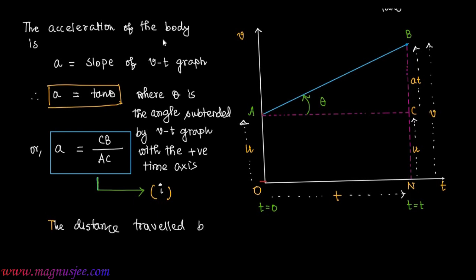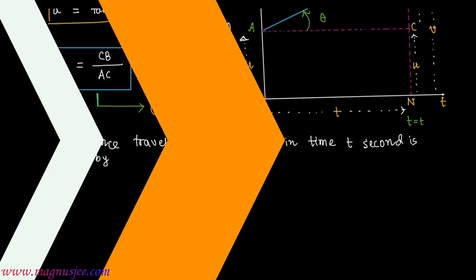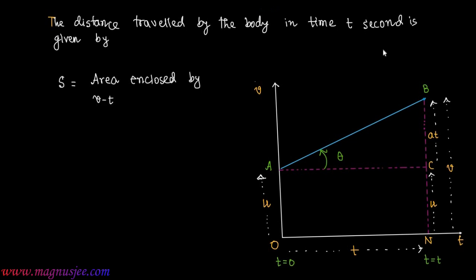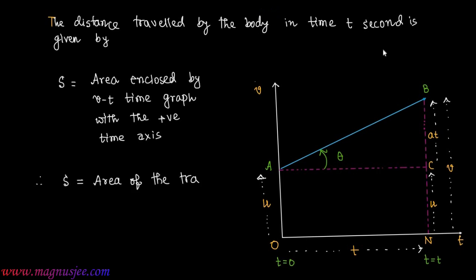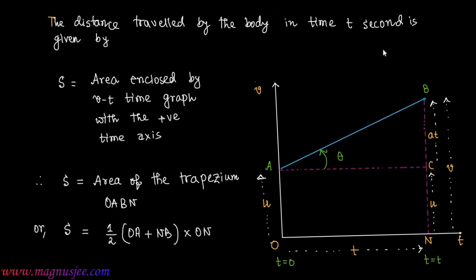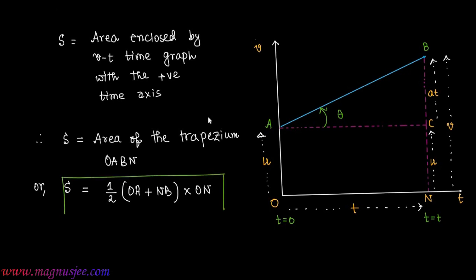The graphical significance of the distance traveled by the body from A to B: the distance s is numerically equal to the area enclosed by the VT graph with the positive time axis. Therefore, s = area of trapezium OABN = ½(OA + NB) × ON ... (Equation 2).